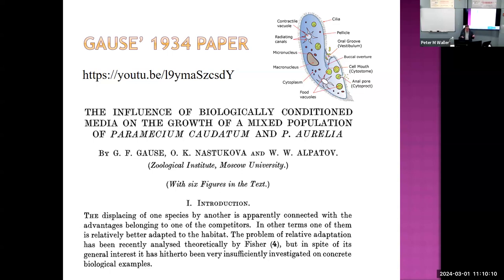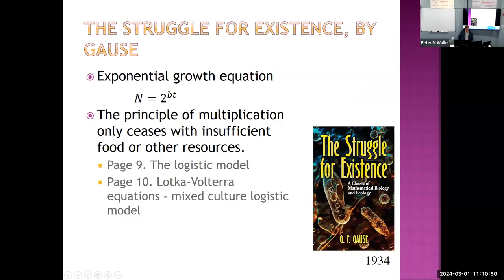Another interesting finding was that the combined populations were greater than the populations of either species alone — a kind of complementary effect where the combined populations would be greater. This is from one of his papers. He wrote his dissertation from 1930 to 1934 and was very interested in the logistic model, which had recently been developed. His supervisor, Alpatov, had worked with logistic model researchers in America, while Gause was at Moscow University.